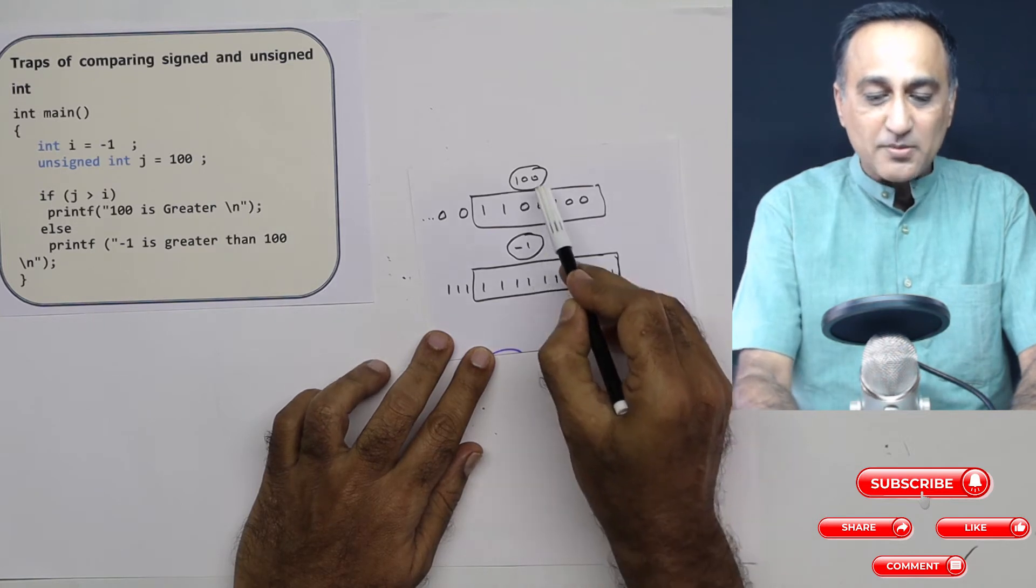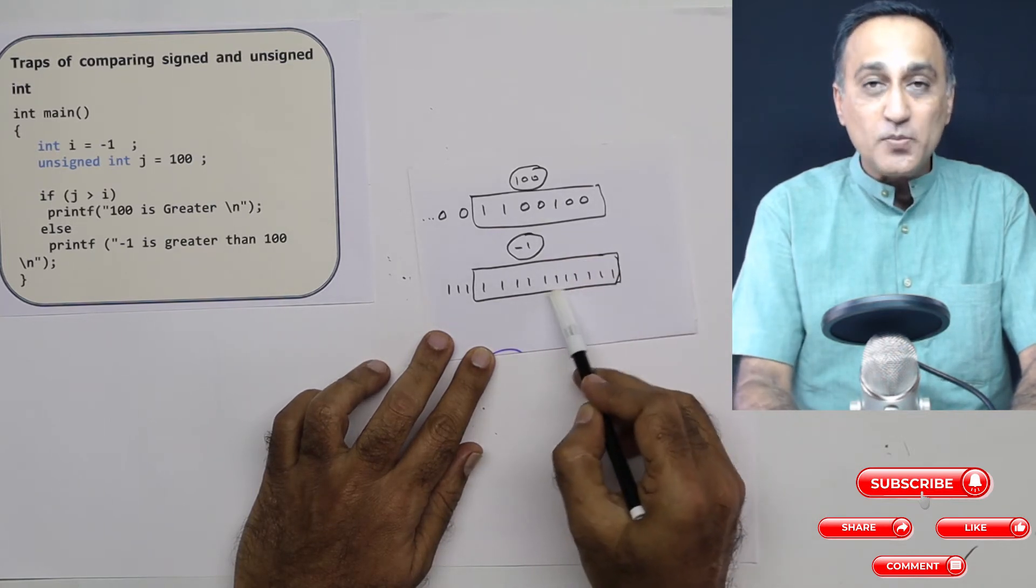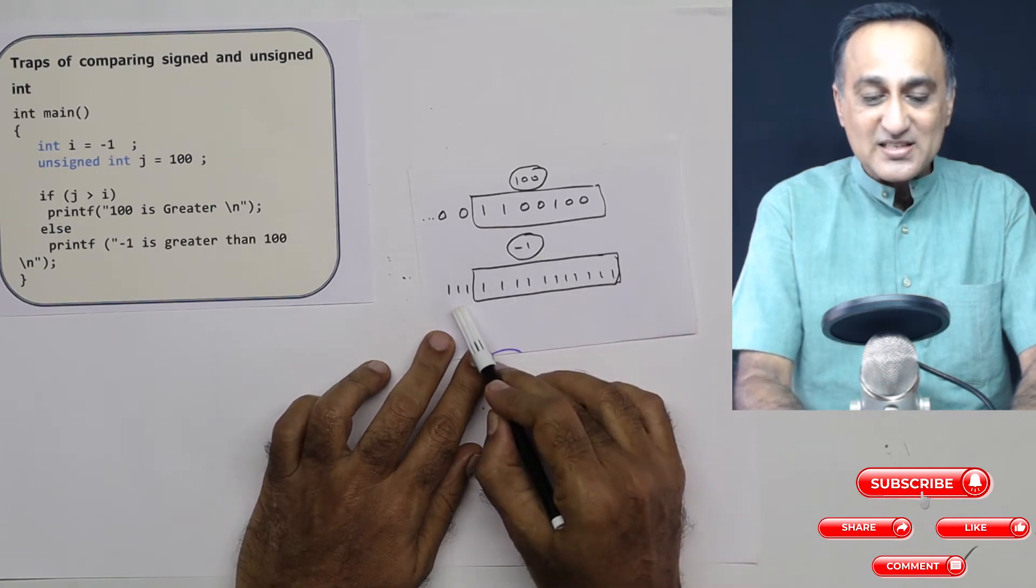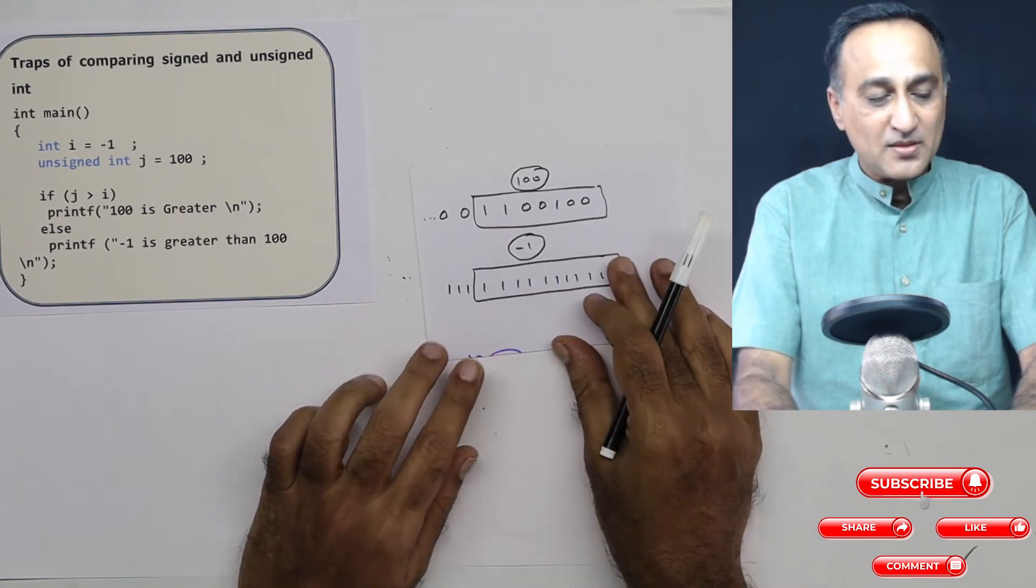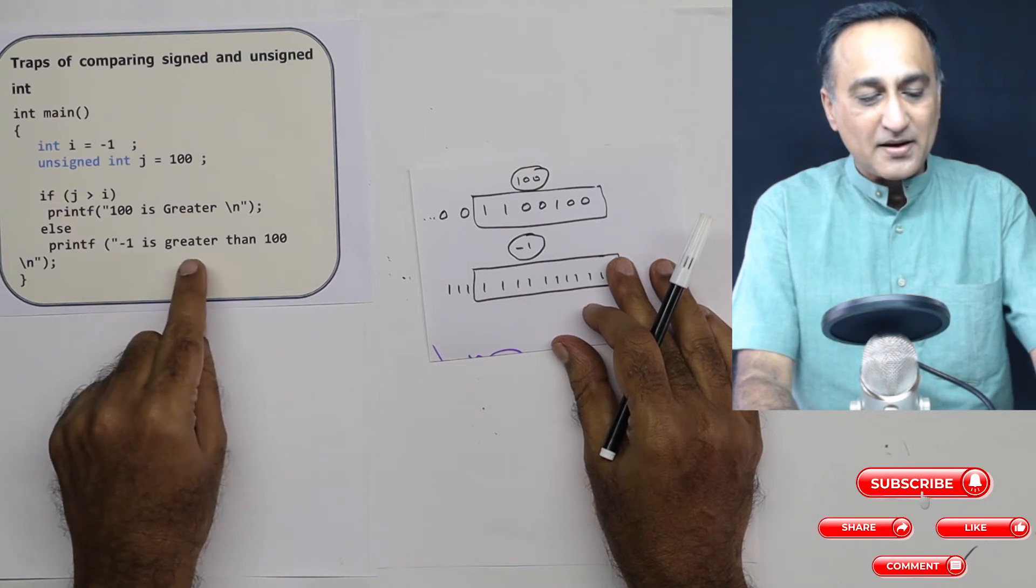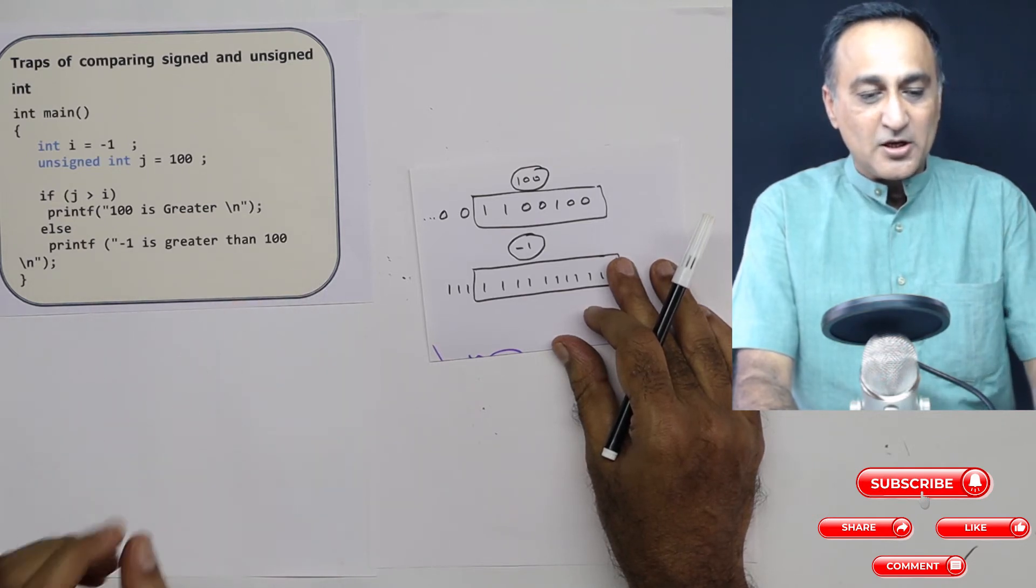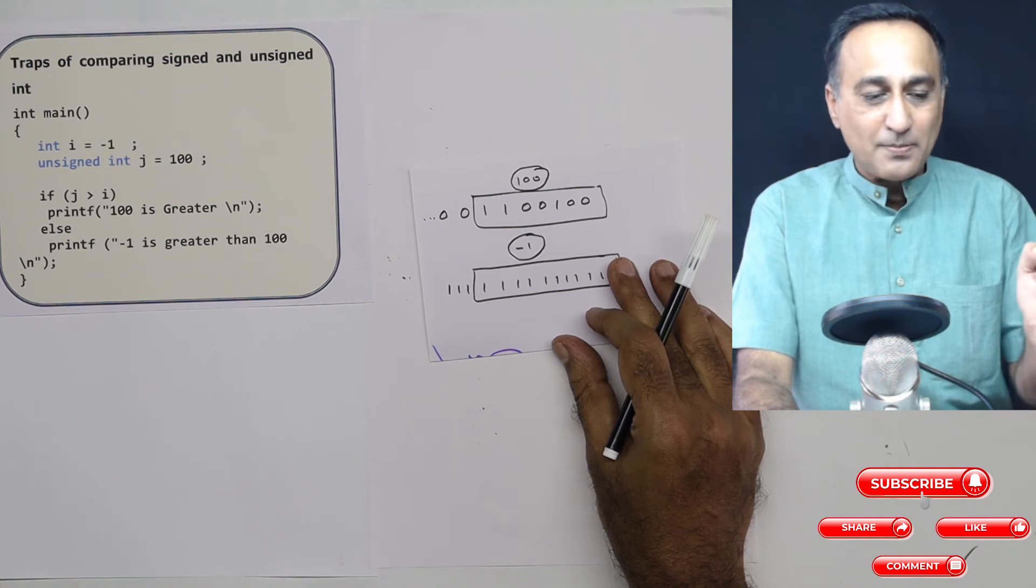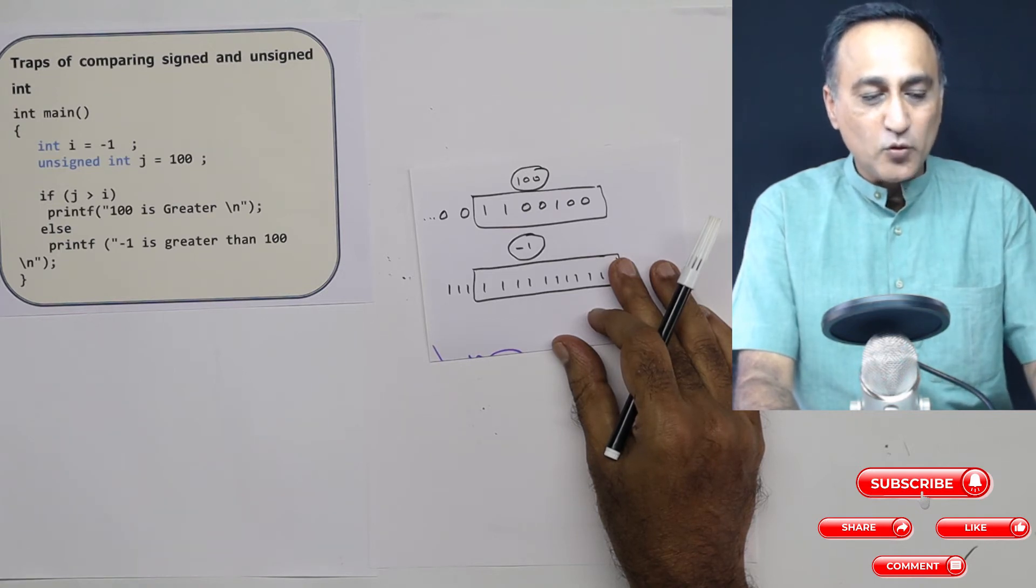So when you're comparing this unsigned number with 100, obviously this is going to be bigger, because now it is not treated as -1, it is treated as an unsigned number which is very big. Therefore, you're going to get a result like -1 is greater than 100. So be careful when you're multiplying signed with unsigned, when you're comparing signed with unsigned, you will not get what results you expect unless you really know what you're really trying to do.